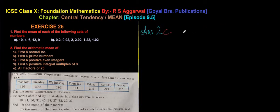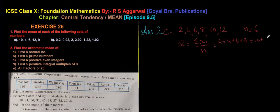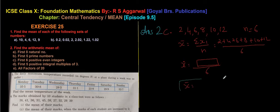For 2C, find the mean of the first 6 positive even integers: 2, 4, 6, 8, 10, and 12, so n = 6. x̄ = (2 + 4 + 6 + 8 + 10 + 12) / 6. Add them, divide by 6, write x̄ and make a box. It is simply addition and division.